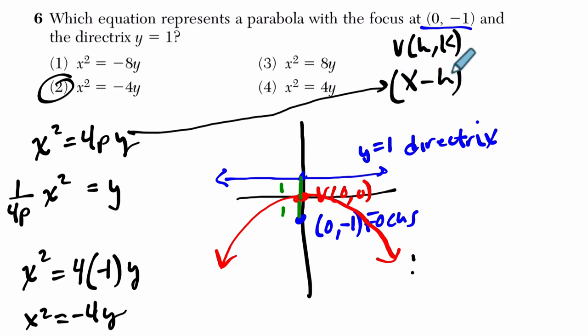You translate over h units to the right by subtracting h. And then that would equal 4p times y minus k. You shift up k units by subtracting k.